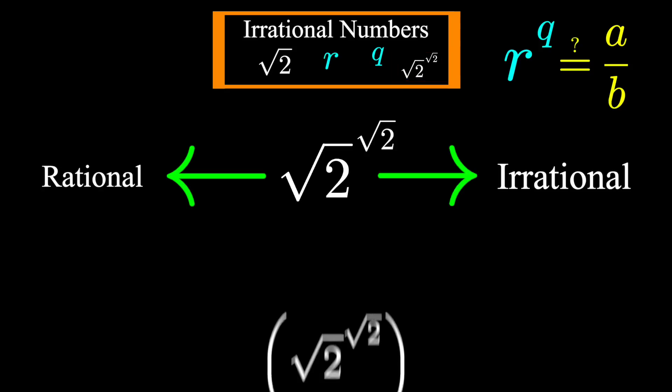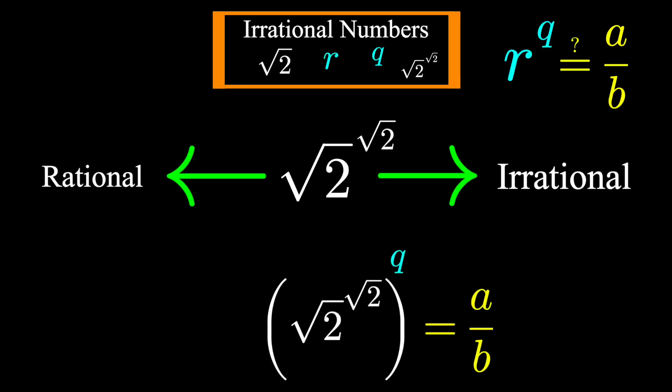...is square root of 2 to the power of square root of 2 to the power of any other irrational number ever a rational number? So again, we need to pick an irrational number to place in the exponent.